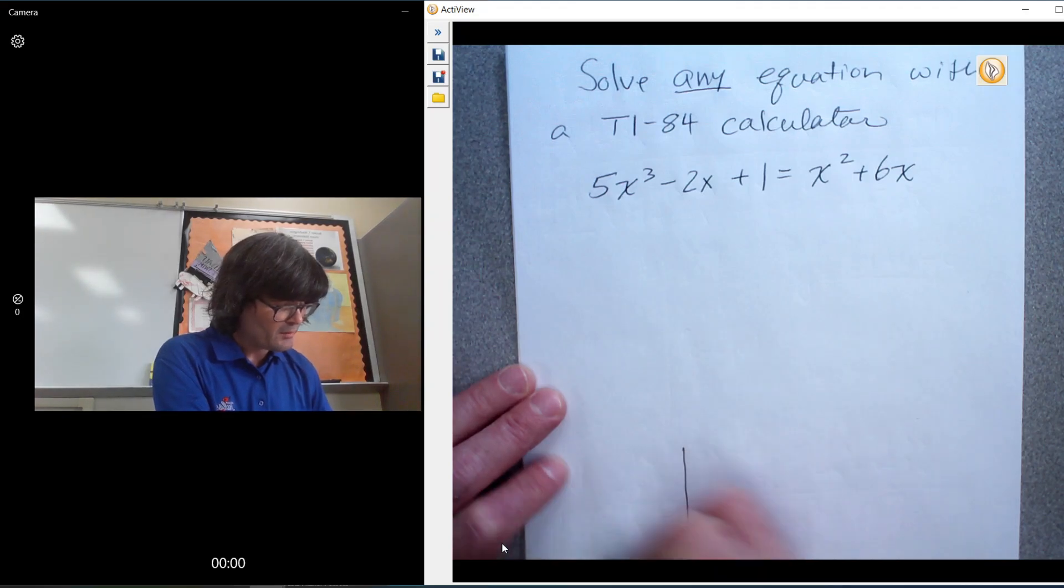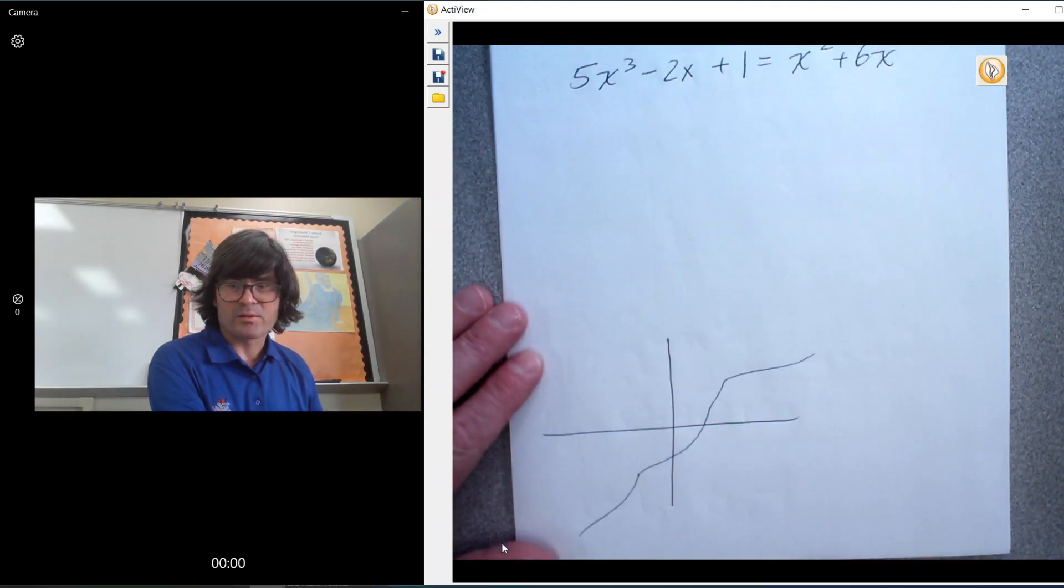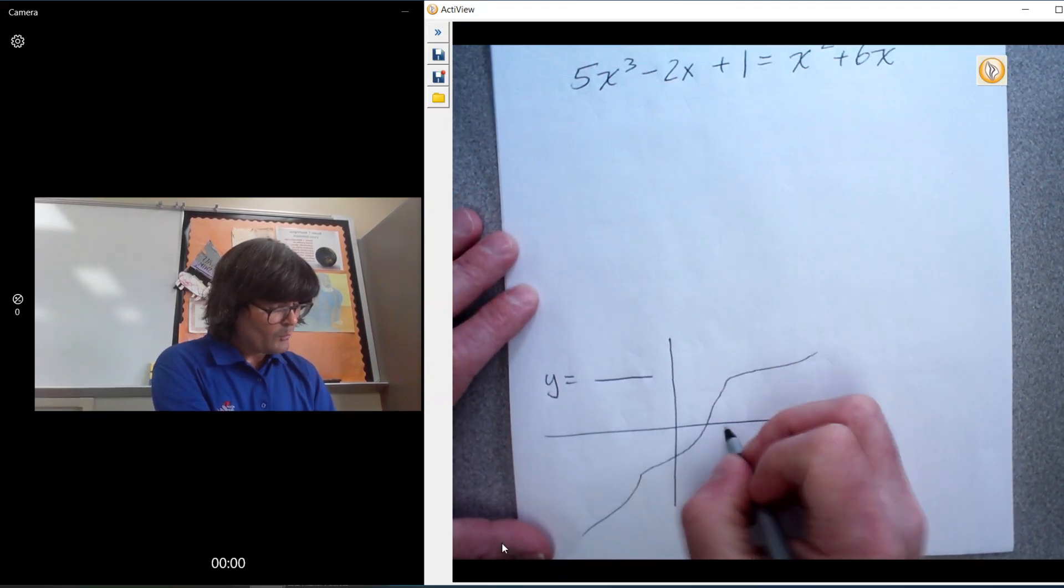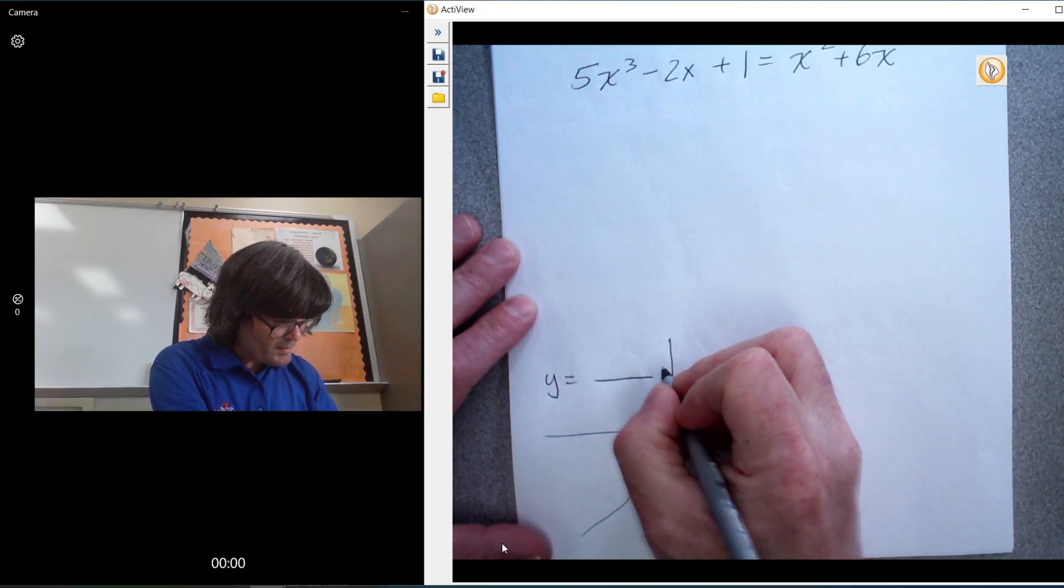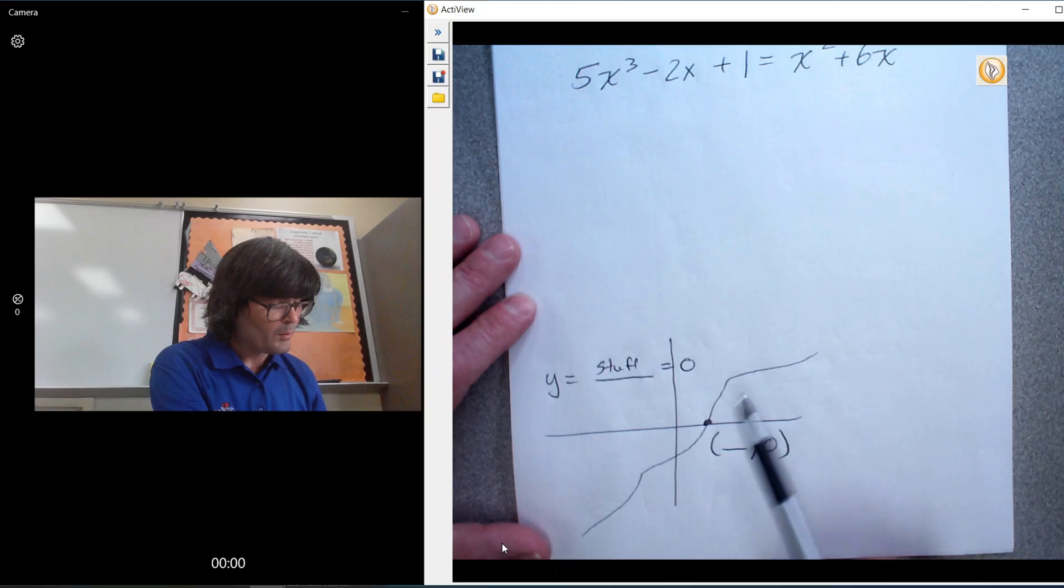If you have any sort of equation and you just draw your graph like that, say this is y equals something, whenever this crosses zero, that is always a y value of zero. And so if you can make this stuff equal to zero, then whatever x value you get right here is your answer.